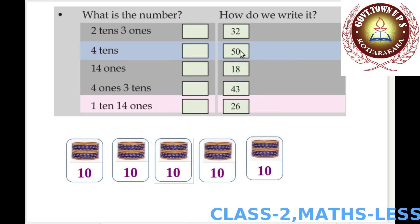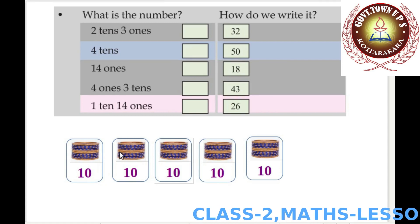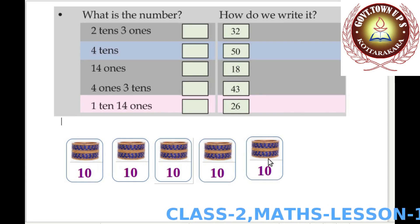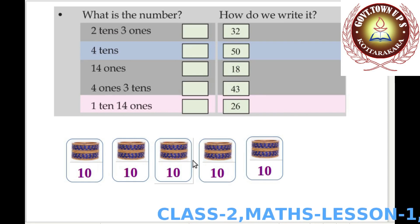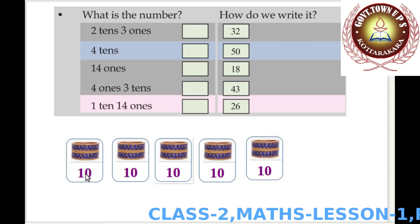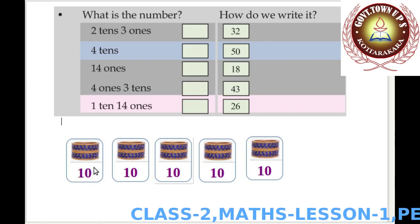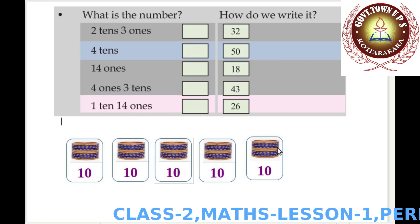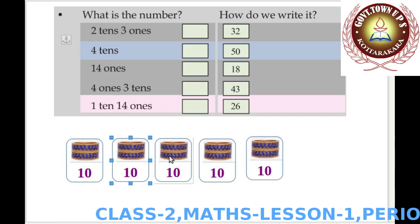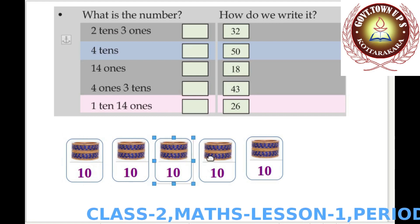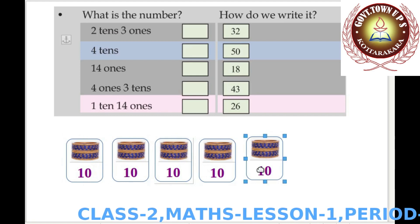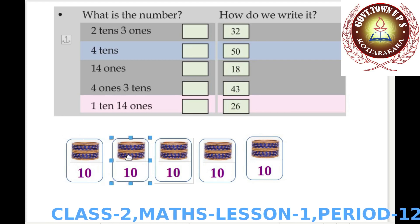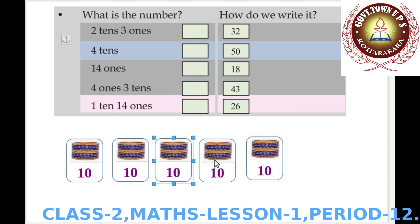Here is 50. Count the tens: 10, 20, 30, 40, 50. How many tens in 50? Count: 1, 2, 3, 4, 5. Five tens make 50.